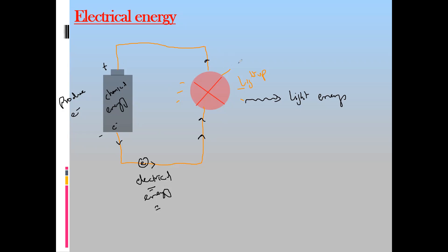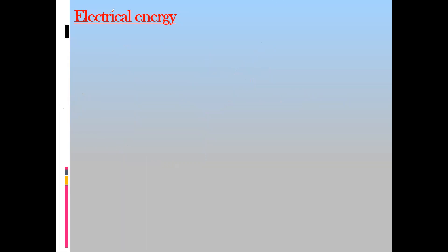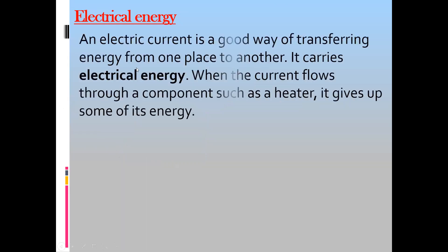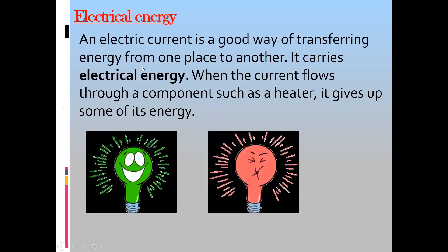Energy changes from one form to another. First, chemical energy inside the battery drives a chemical reaction that produces electrons. As electrons move they carry electrical energy, and when they transfer energy to the lamp, light is produced. Electrical energy also produces heat and light.